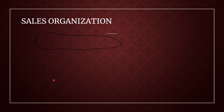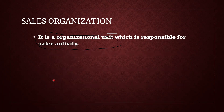Now they have asked: what is Sales Organization? It is a place where sales activity happens and negotiation with customers takes place. The organization which is responsible for sales activity and sales negotiation with the customer — this is the expected answer.